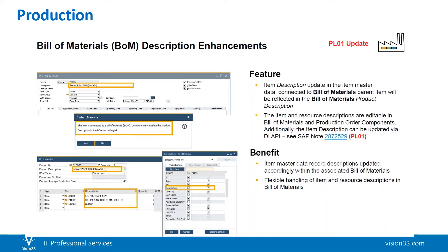Now let's talk about production. Bill of materials has always been one of the great strengths of SAP Business One because there are so many different types of bills of materials, giving a lot of flexibility throughout the system. Some new features: the item description update in the item master data connected to the bill of materials parent item will be reflected in the bill of materials product description. The item and resource descriptions are editable in the bill of materials and production order components, and the item description can also be updated via the DI API. This means item master data record descriptions are updated accordingly within the associated bill of materials automatically when you make a change at the master item level.